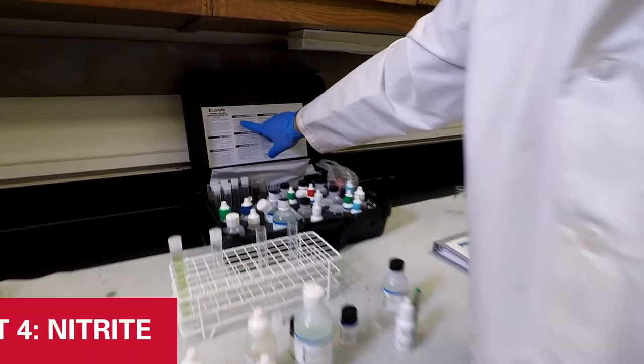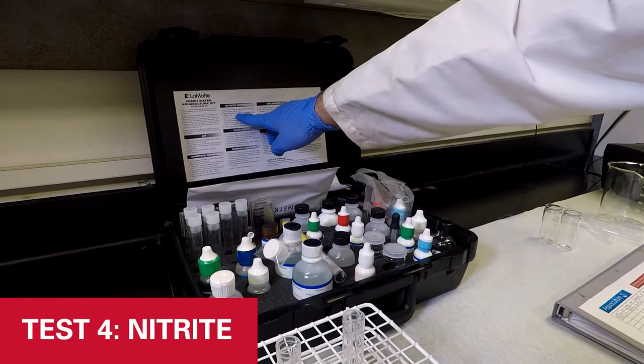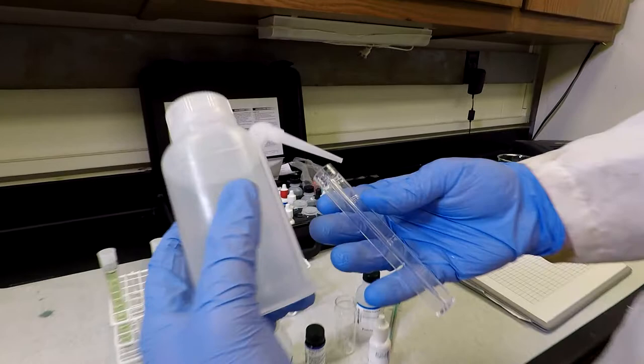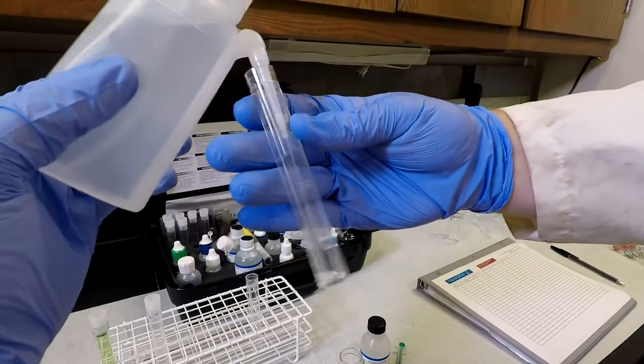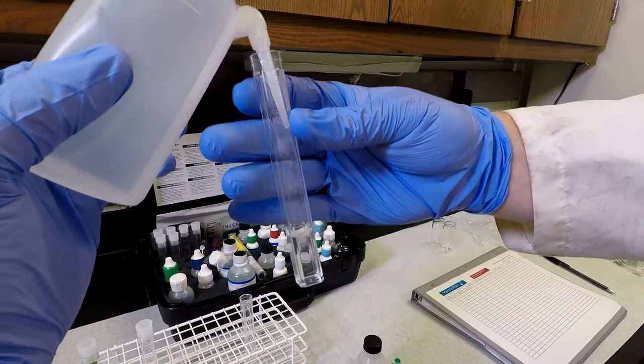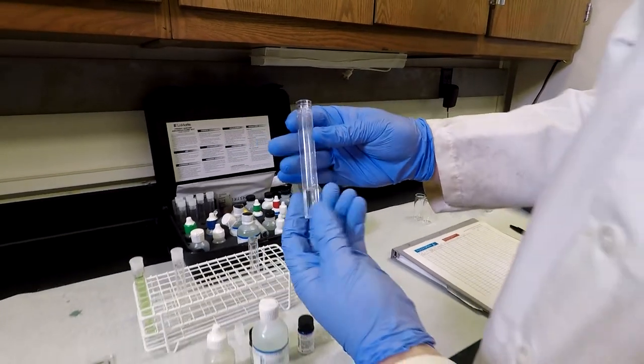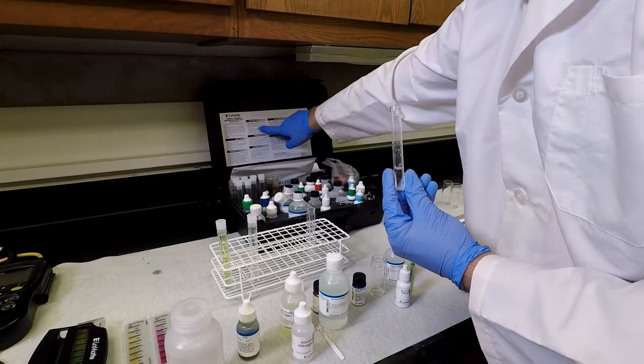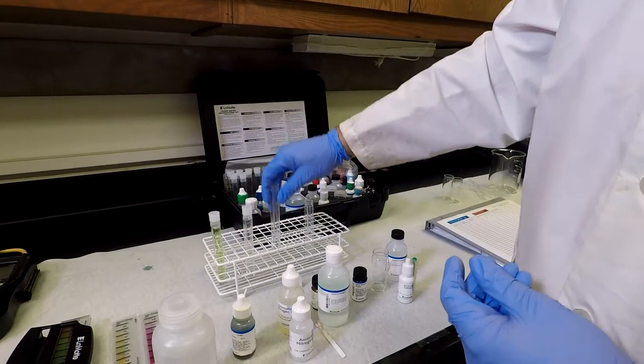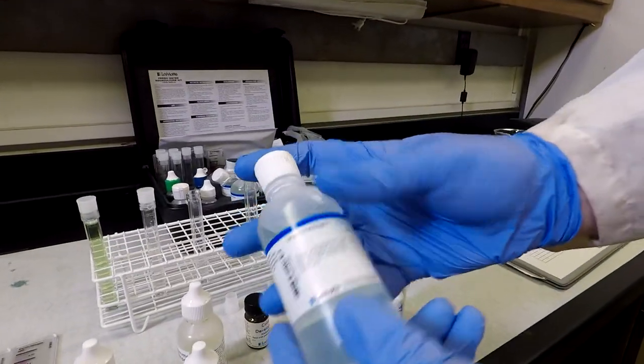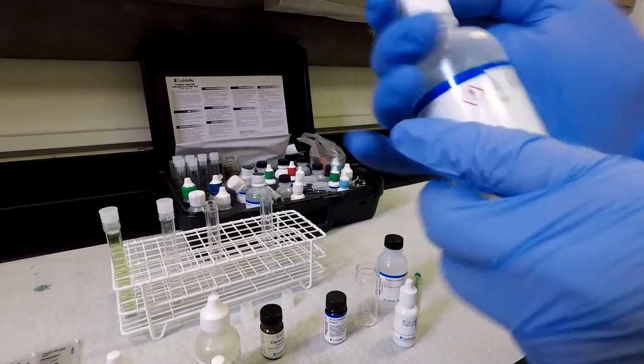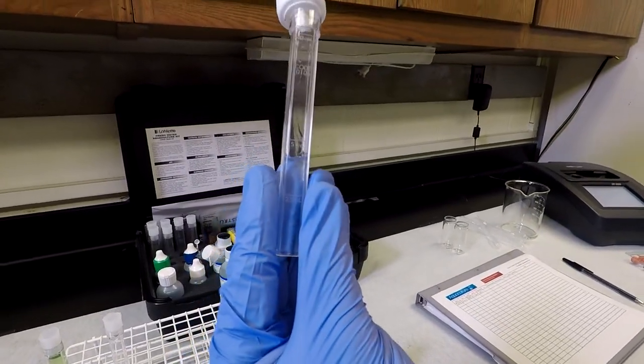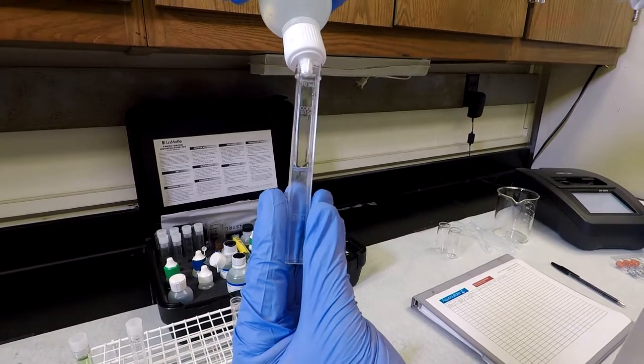Our next test is going to be nitrite. So we're looking at filling our test tube to the 2.5 milliliter mark. We're going to fill up to 2.5 milliliters. And the next step, according to the instructions, is to fill the rest of the way up with our mixed acid reagent up to 5 milliliters. I'll go ahead and mix that. And I can hold the sample and fill it up to the 5 milliliter line.